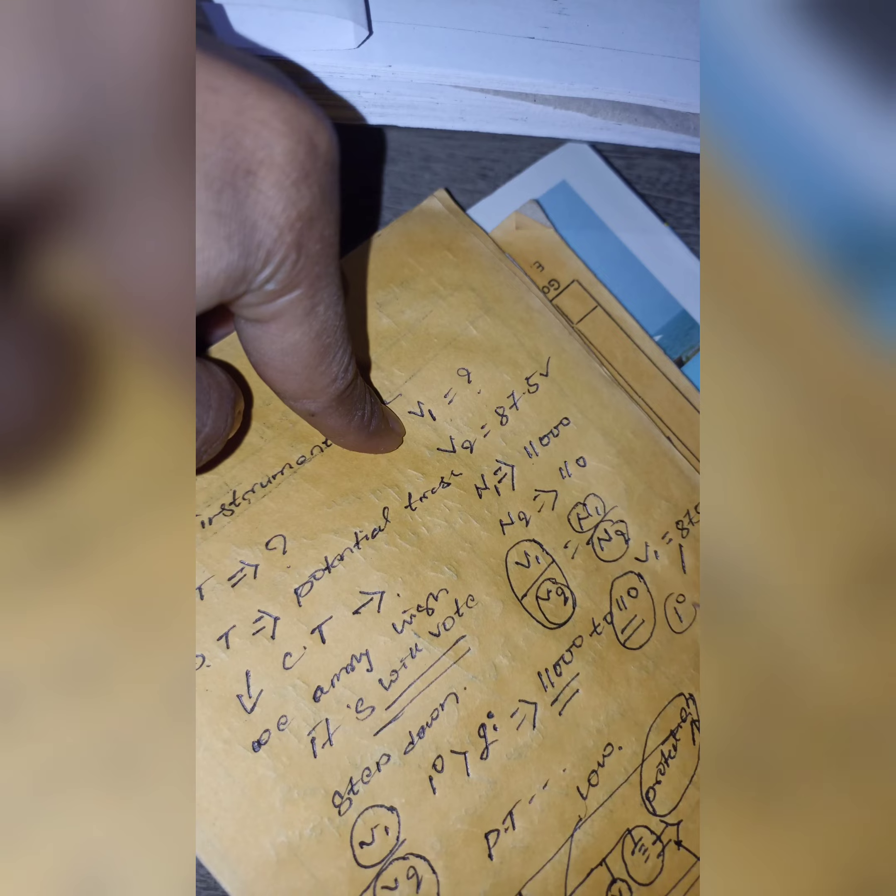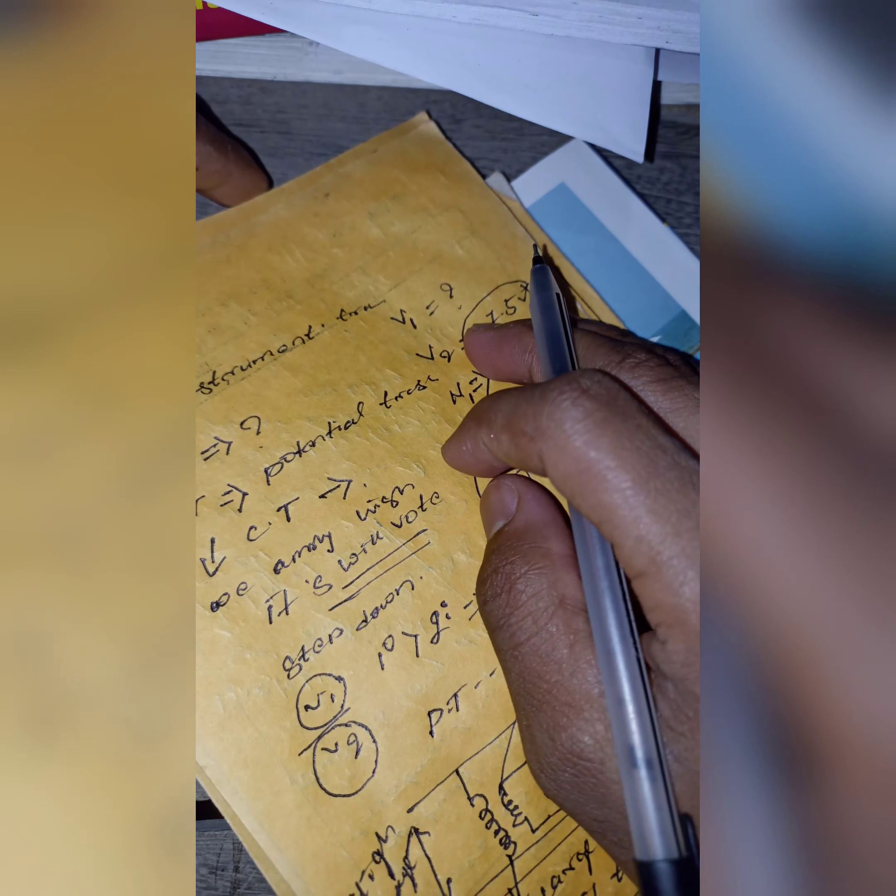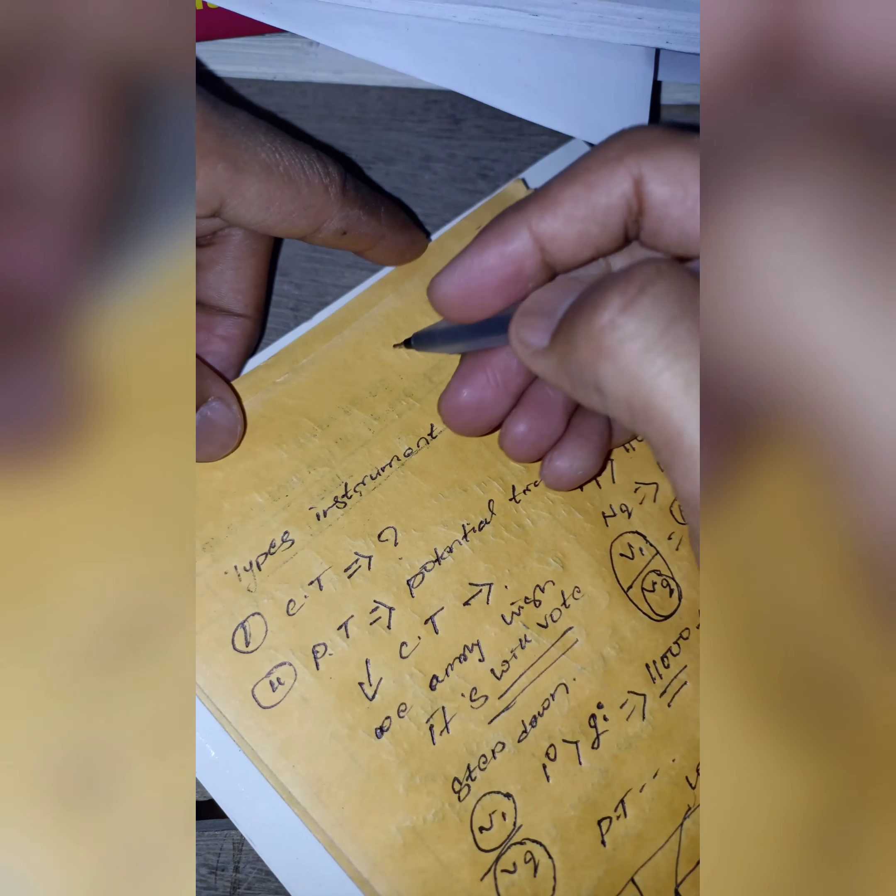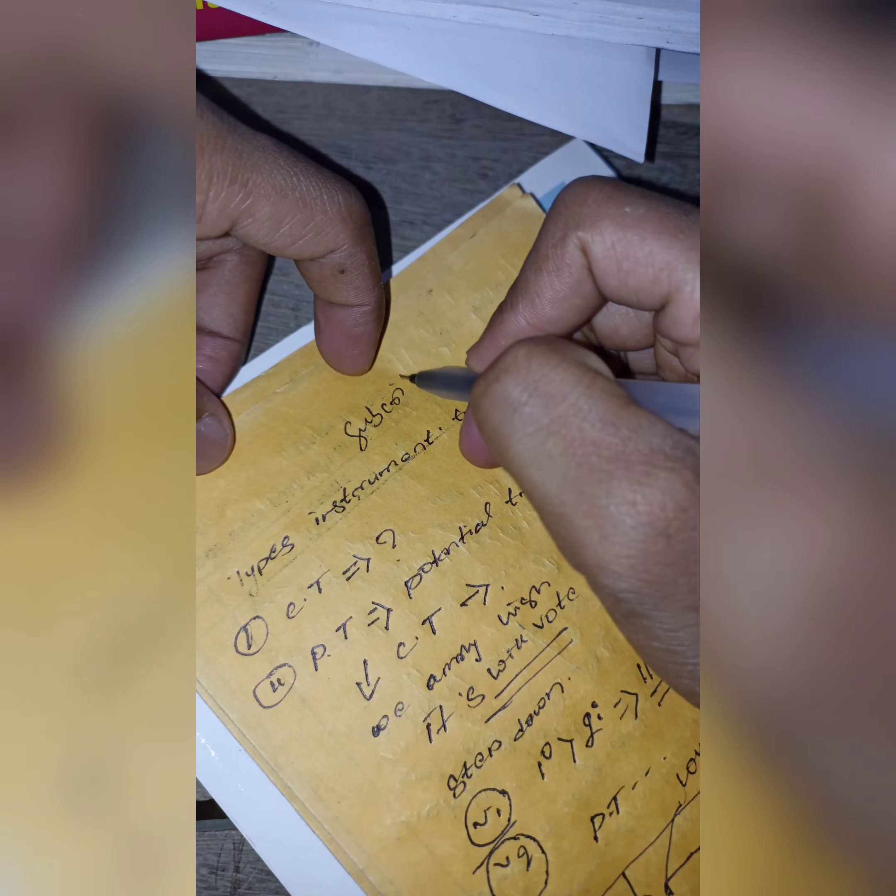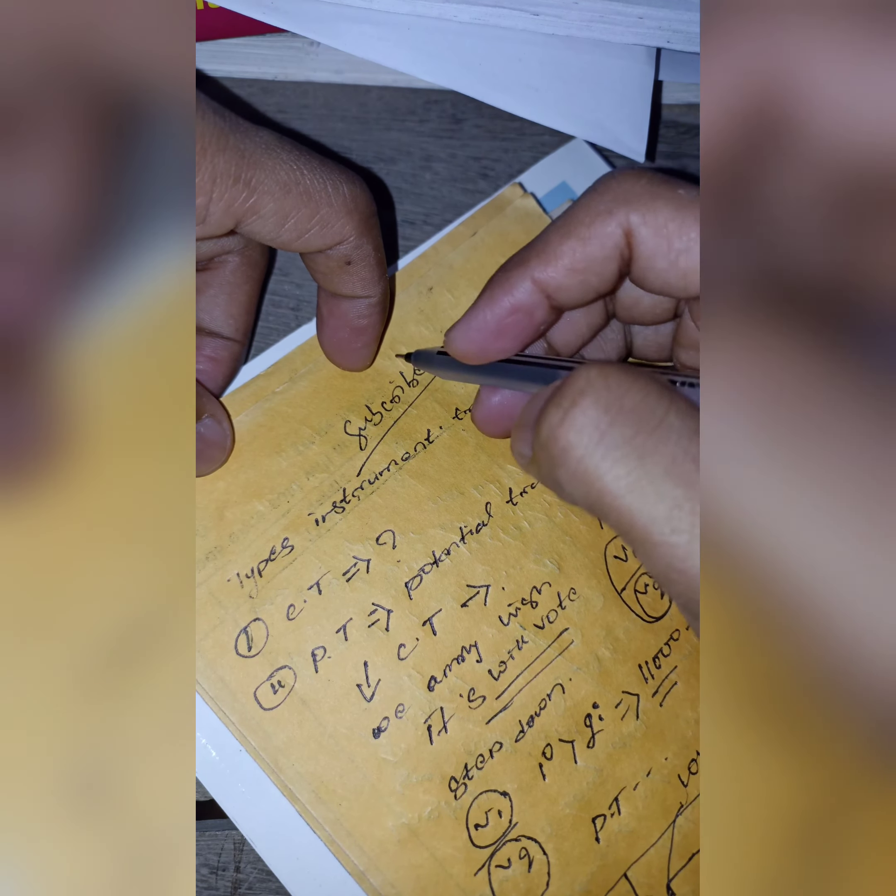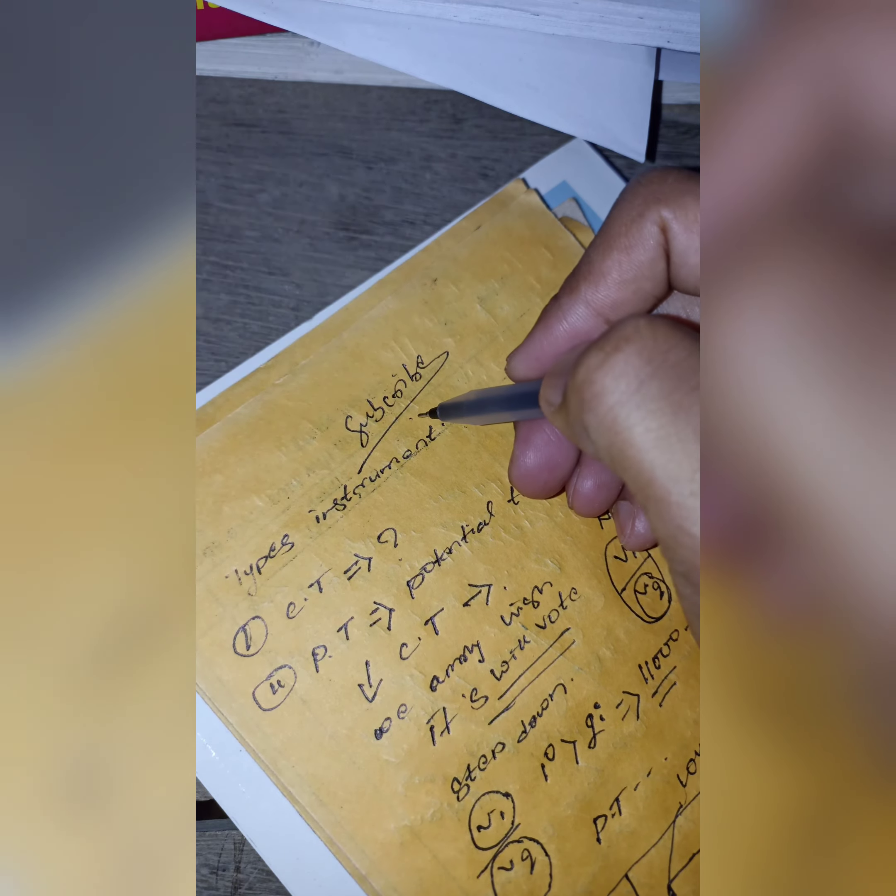Then you will get V1 equal to 87.5 times 2000 divided by 100, which gives 1750 volts. This is your primary voltage and the other is your secondary voltage. If you want more knowledge about electrical electronics, please subscribe my channel and support me.